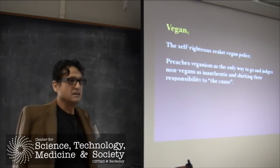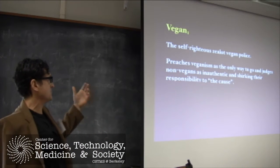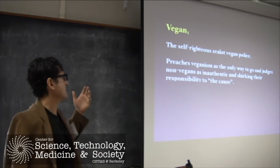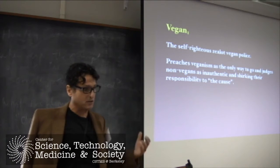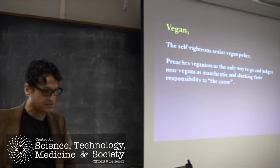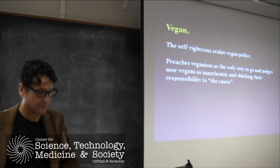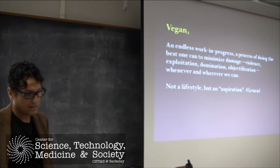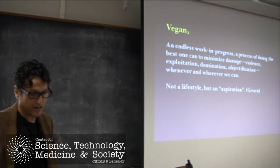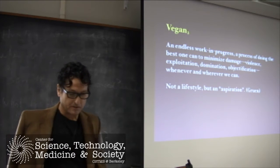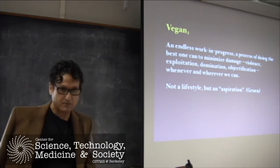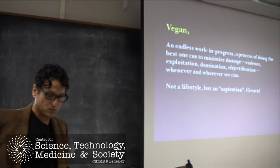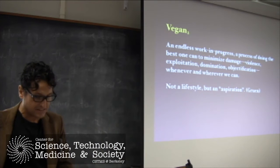I think there are two notions of veganism at least. There's one notion where if someone said they're a vegan, there's this image of the self-righteous zealot vegan police. This is the person who preaches, judges non-vegans as being inauthentic, and says non-vegans are shirking their responsibility. These are the kind of vegans that I avoid myself. But there's another sense that I call vegan sub two, where you see veganism as an endless work in progress, a process of doing the best one can to minimize damage, violence, exploitation, domination, and objectification wherever and whenever we can. On this view, veganism is not a lifestyle, but an aspiration.